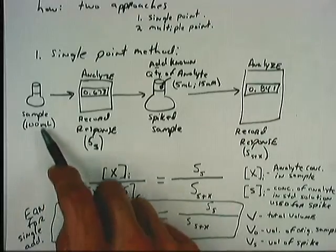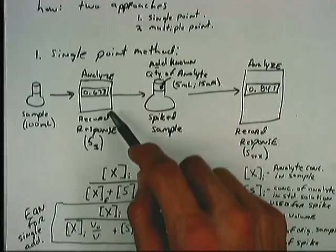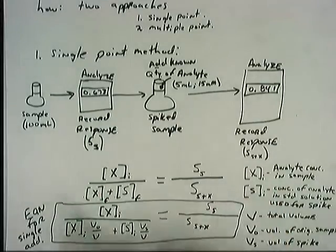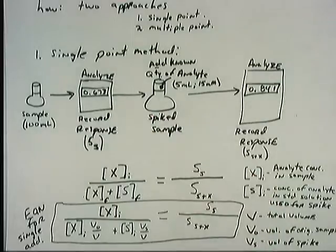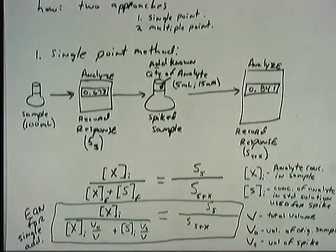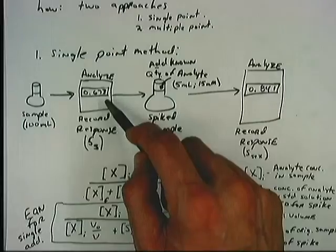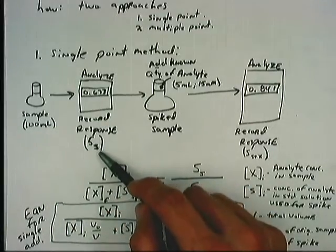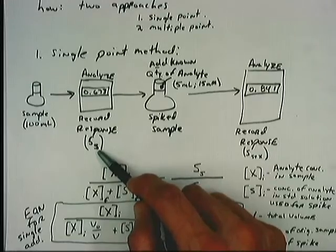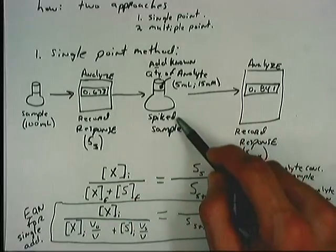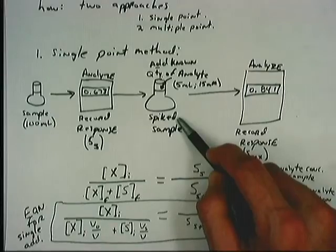We would take our original sample, prepare it, get ready to analyze it, and then we would subject it to analysis using the technique. Here I've drawn that just as a black box with a number in it. That number is representative of the signal that our black box detector records. It's not important whether this is a spectrophotometer or a chromatograph or whatever other analysis technique. Right now, it's just a device that produces a signal that's linearly proportional to the analyte's concentration in our sample. So we analyze our sample, it produces a response. We give that response the symbol S sub S, our sample response, our sample signal.